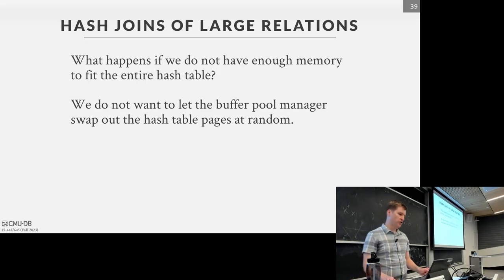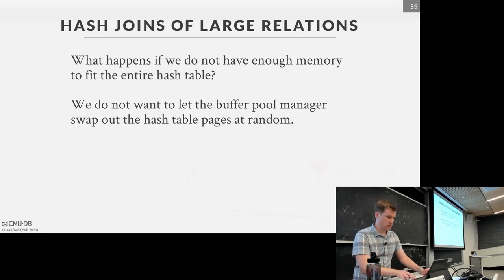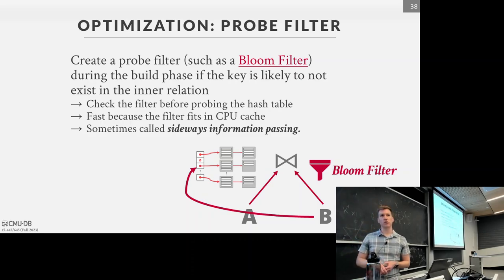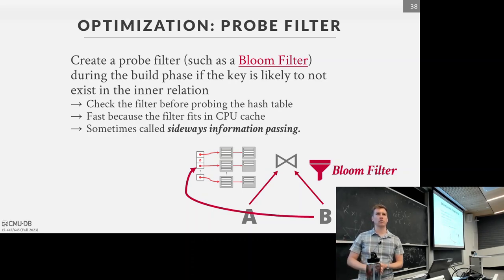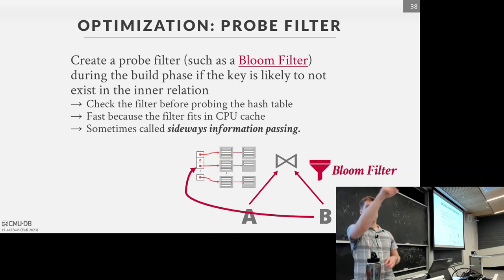Q&A: Would you have one bloom filter for the entire table? You're building the bloom filter on the join attribute — whatever the predicate is. In practice, systems sometimes keep bloom filters around as supplementary data structures, similar to zone maps, building them as they go to help with future query execution. But in this hash join context, you build it dynamically on the join attribute during the build phase and then discard it afterward.